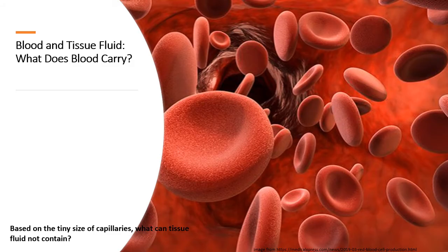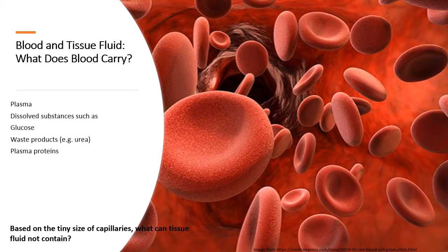So the first question is: what does blood carry? Blood carries plasma, some dissolved substances such as glucose, some waste products like urea which we pass out in our urine, and it also carries plasma proteins. That is in addition to the blood cells — it carries the red blood cells, the white blood cells, and the platelets as well.